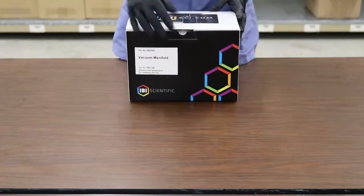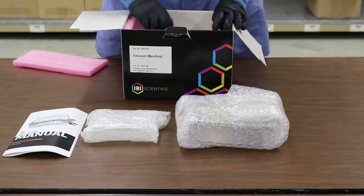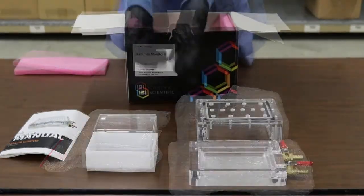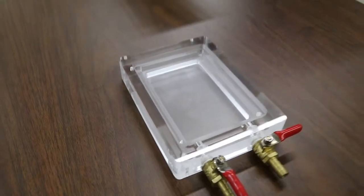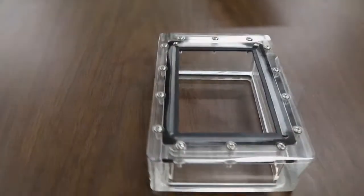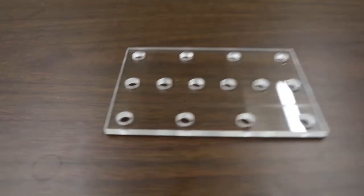IBI Scientific manufactures vacuum manifolds from machine-tooled acrylic bases and American-made valves. Your new kit comes with a vacuum manifold base, collection plate spacer, waste tray, vacuum manifold top piece, and spin column adapter plate.